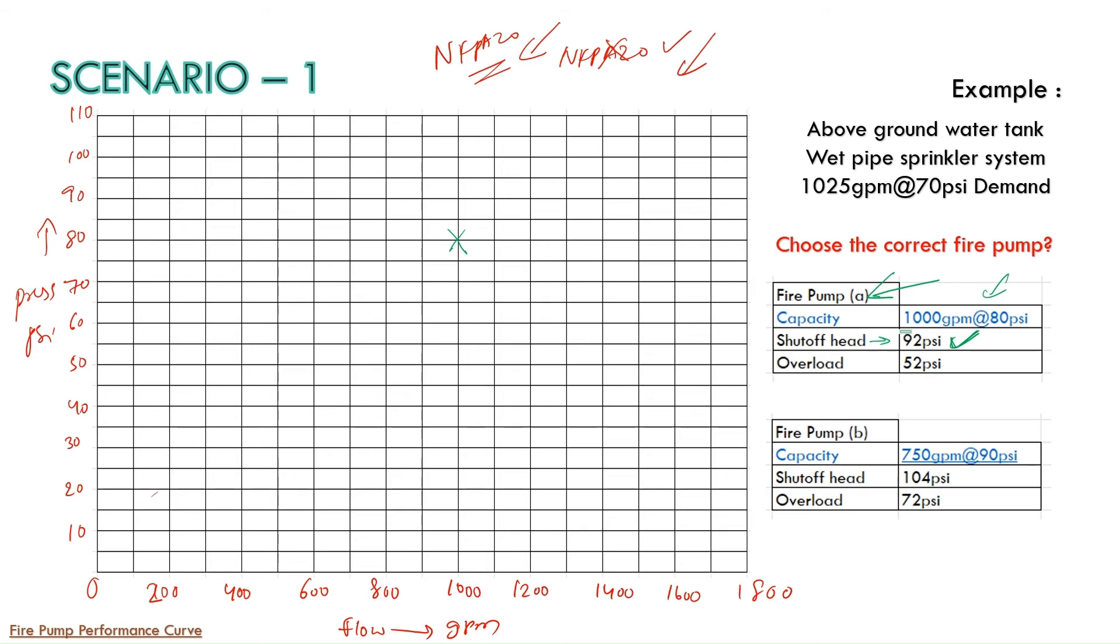And then we need to put at zero flow the shutoff head will be 92 PSI. So here on y-axis if you look at on y-axis at 92 PSI we need to mark. So 92 PSI we are marking the shutoff head.